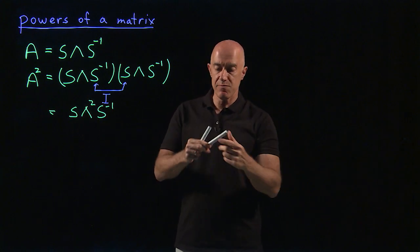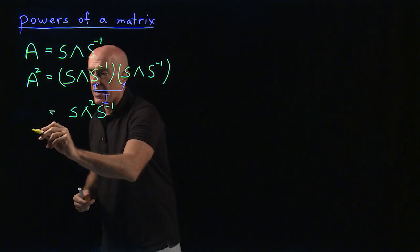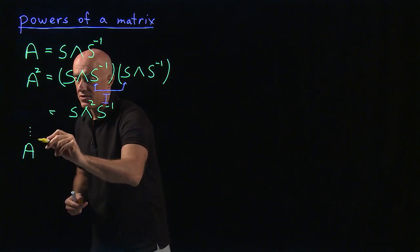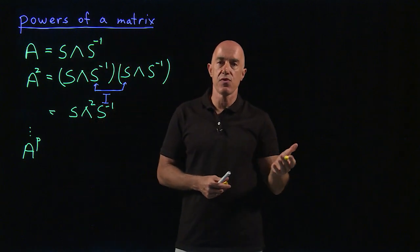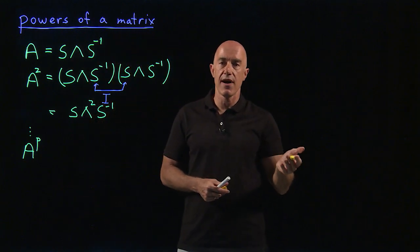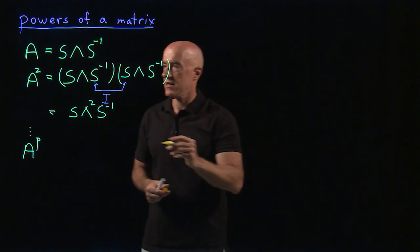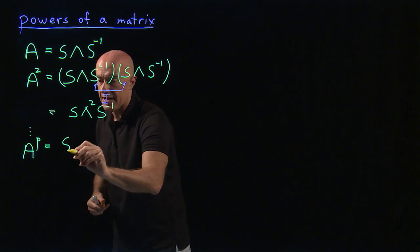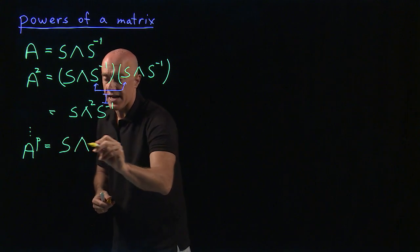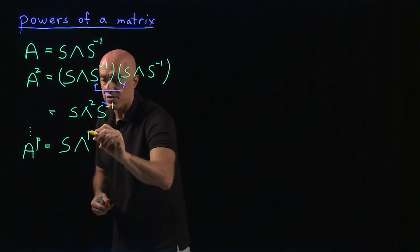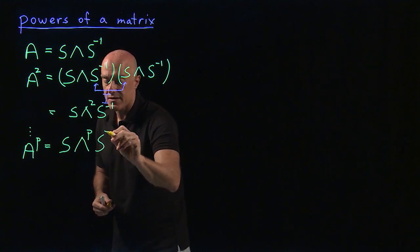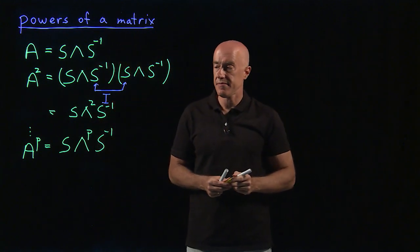We can keep going, so that A raised to the P power — where P can be 3, 4, 5, 6, et cetera — is just S times lambda, the diagonal matrix raised to the P power, times S inverse.